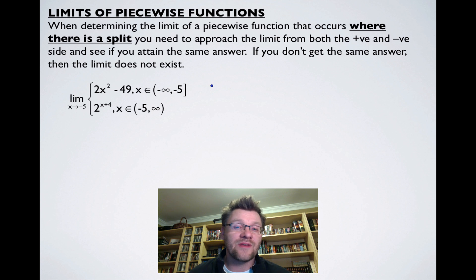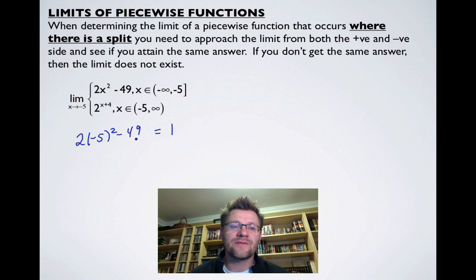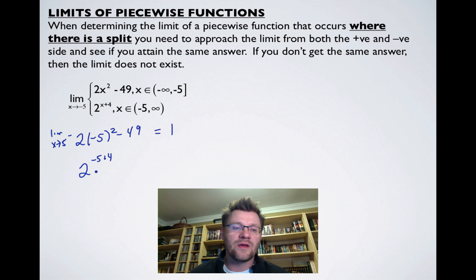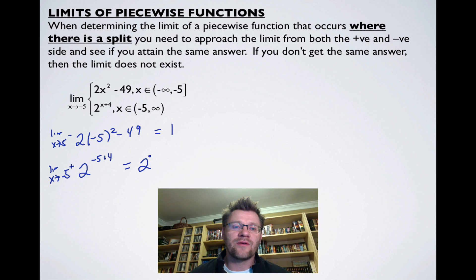If we get the same answer from both sides, that's the limit; different answers mean no limit exists. Plugging negative 5 into the first piece: 2 times 25 minus 49 equals 50 minus 49, which equals 1 — this is the left-hand limit. For the right-hand limit, we use 2 to the power of (negative 5 plus 4), which is 2 to the power of negative 1, equal to one-half.